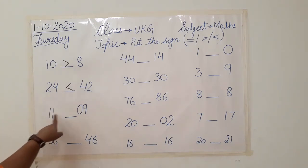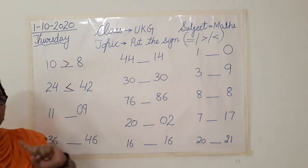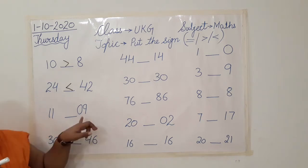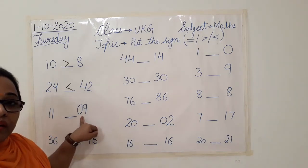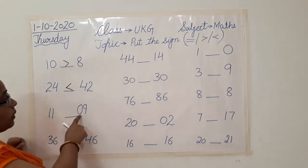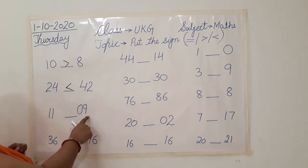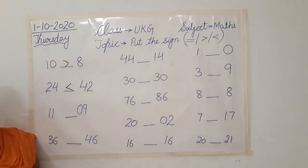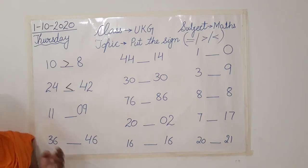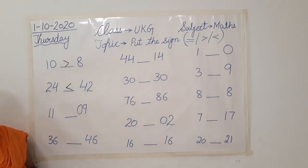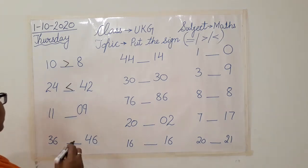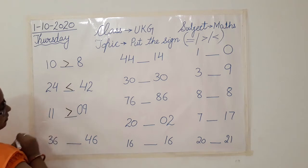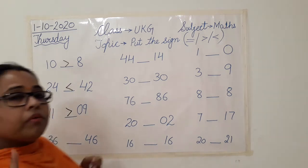Now we have eleven and zero-nine. What is the meaning of zero-nine? Zero-nine means only nine, because zero is at the tens place. So we have only nine here and eleven here. Eleven is greater than nine, isn't it? So we are going to put the greater than sign and the sign will be opening its mouth towards eleven. We will put the mark like this.